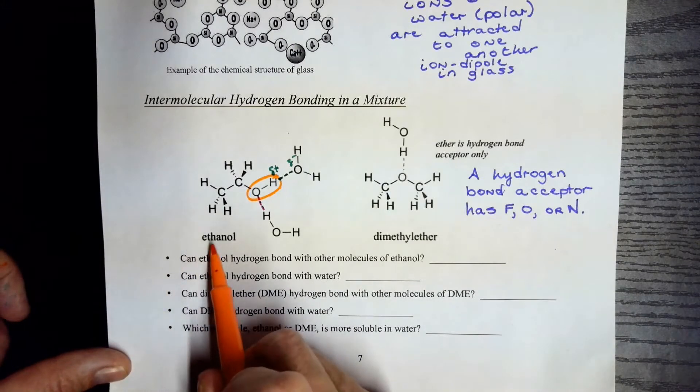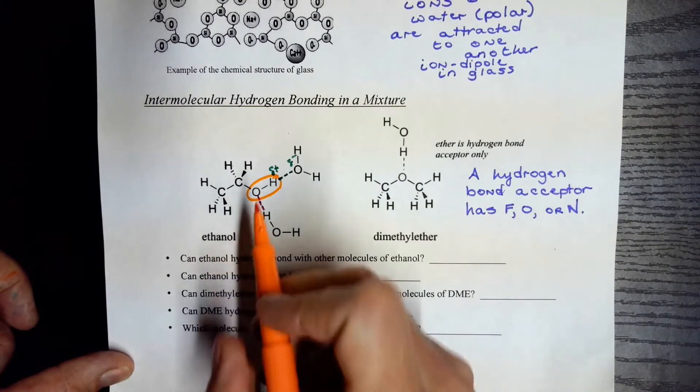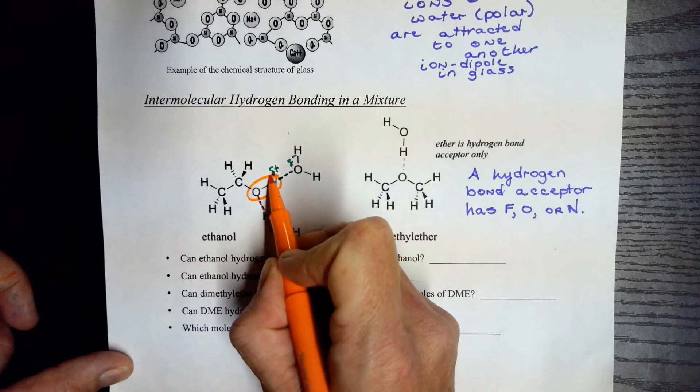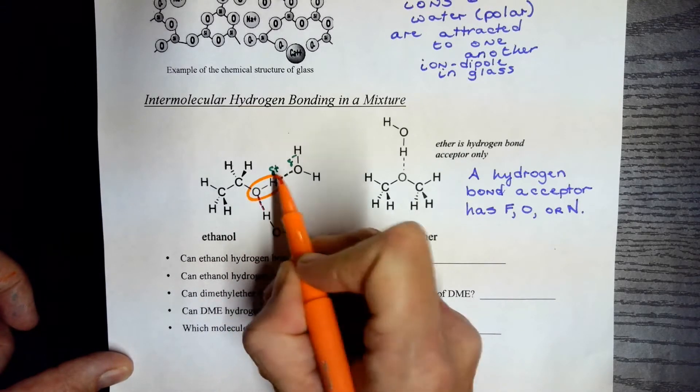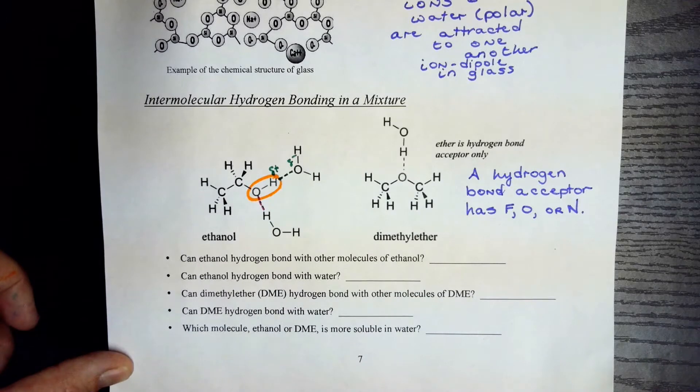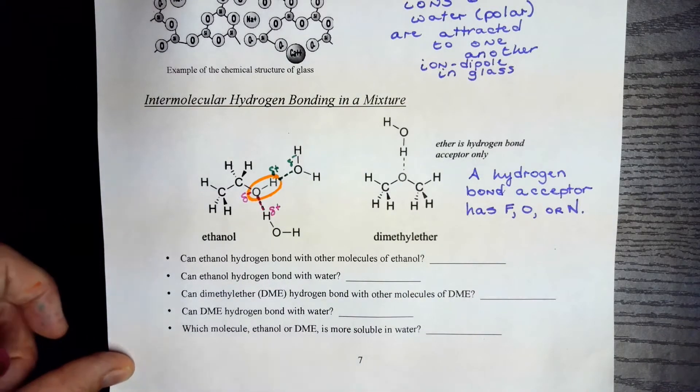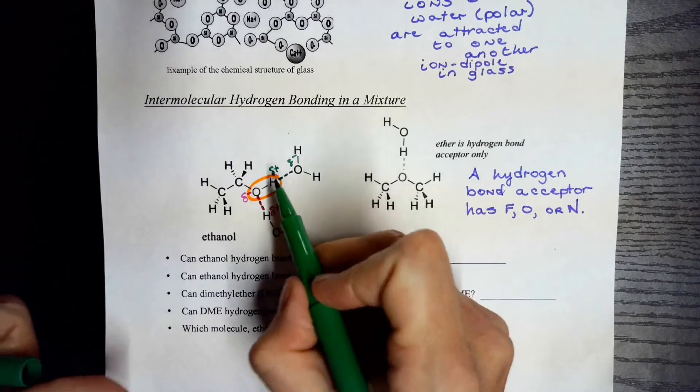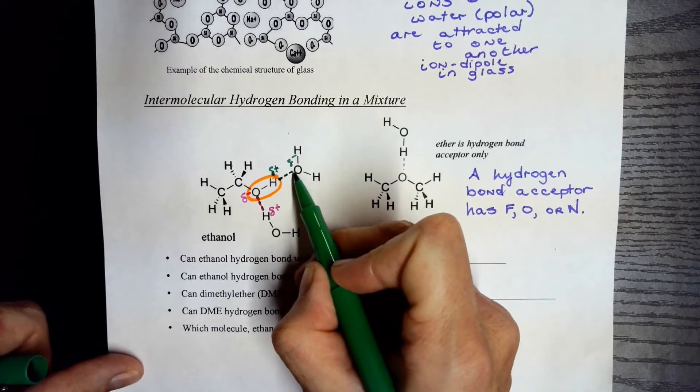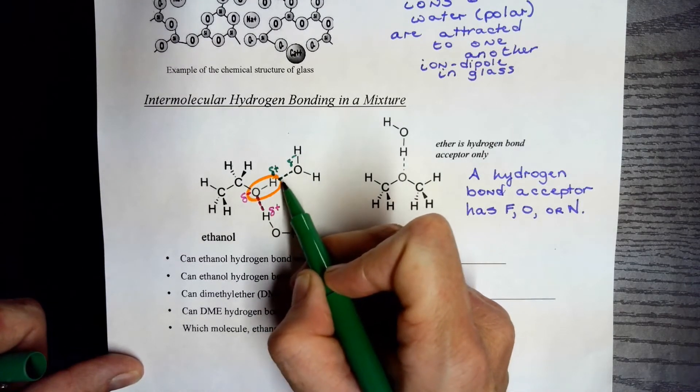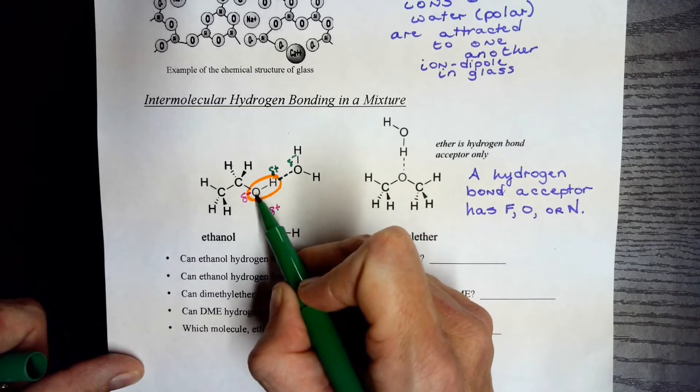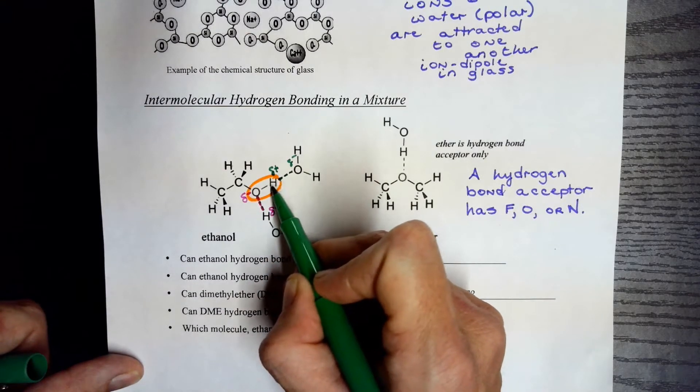In our first example here we have ethanol, and we know that ethanol can participate in hydrogen bonding because it has hydrogen directly attached to oxygen. There's another water molecule above that, and that water molecule is acting as a hydrogen acceptor and the ethanol is acting as a hydrogen donor.